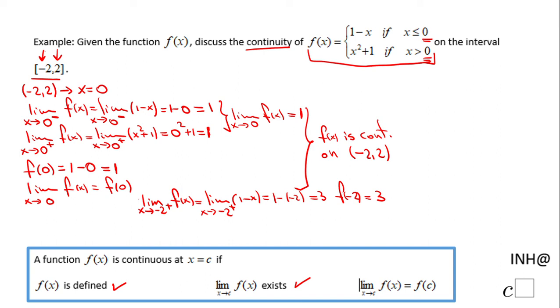Similarly, we're going to do for the other endpoint 2. Now we're going to take a look to the left of 2, values less than 2, however greater than 0. So we're going to use the second piece of the piecewise function.